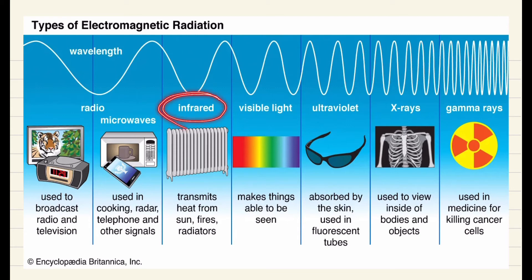Then comes the infrared waves. Infrared waves are basically associated with heating and some signaling devices like remote controls and metal detectors, and they transmit heat from the sun, fire, and radiators. So infrared waves are associated with short-range signaling devices and heating devices.